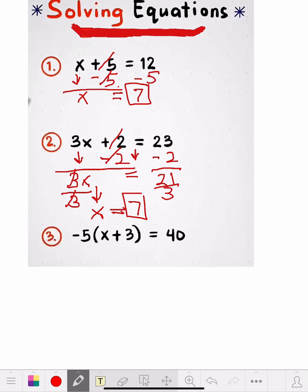Now let's look at this next one — it's a little more complicated. We have negative 5 times (x plus 3) equals 40. I need to get rid of the parentheses first. I have to distribute the negative 5 to both terms. Negative 5 times x is negative 5x. Negative 5 times positive 3 — negative times a positive, the negative wins out — is minus 15. The equal sign carries down, and we get 40.